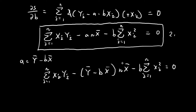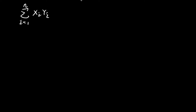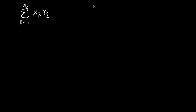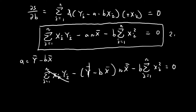Let's open a new page. I'm going to group all the terms with B attached to them on the right-hand side, and leave the remaining terms on the left-hand side. On the left we have the sum of xi times yi, and then minus n times the sample mean of x times the sample mean of y — these are the terms without B.